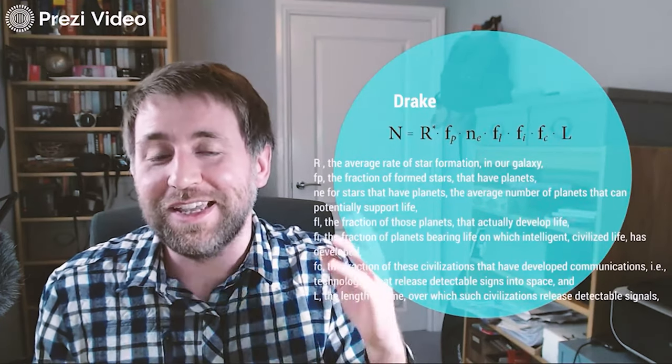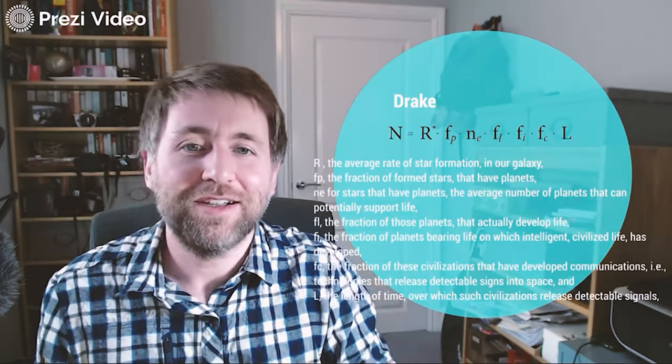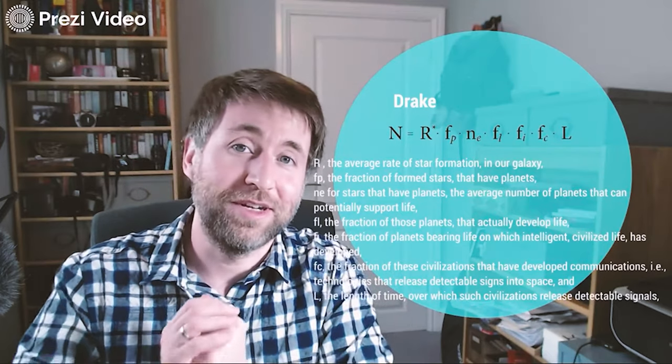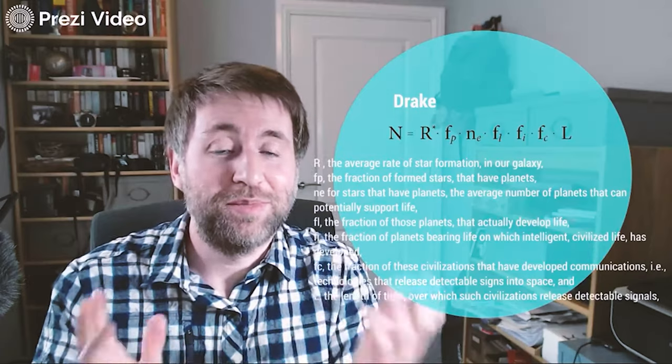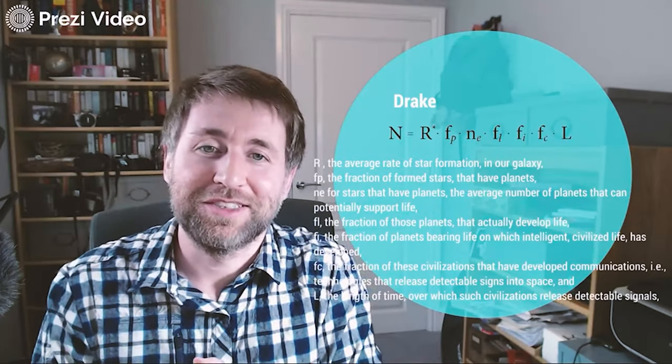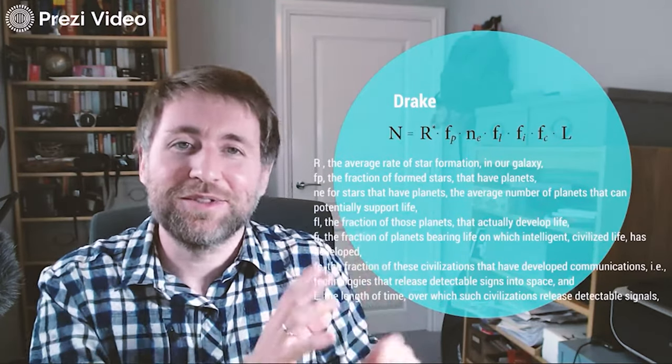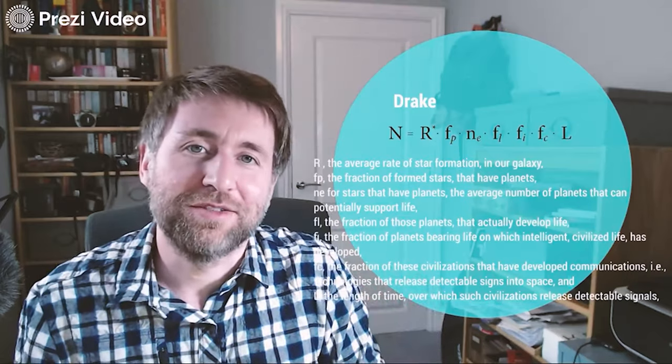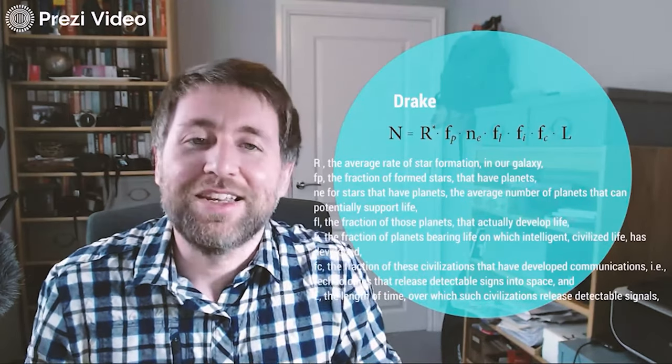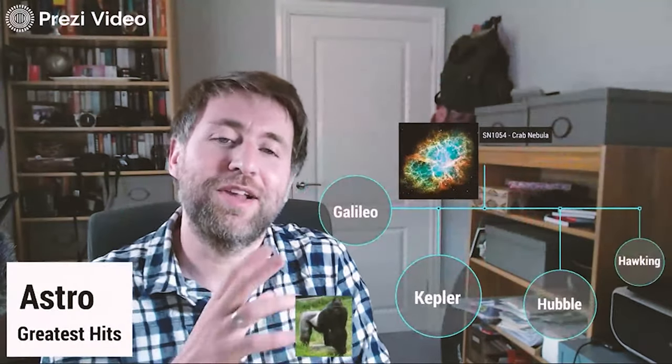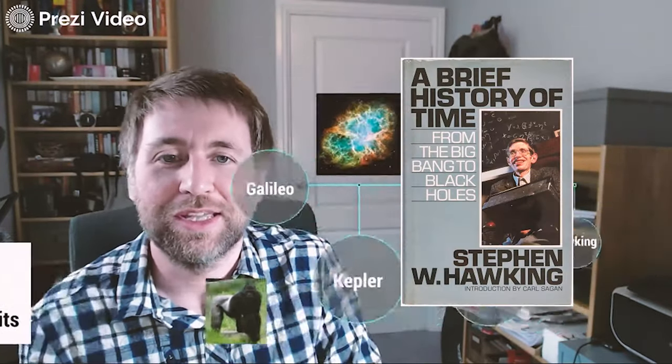Numbers, the problem with this is that estimates vary from like tiny, tiny decimals, 10 to the minus 13, to kind of millions or billions of possible civilizations in our galaxy. So it's kind of crude science, but it's a really interesting consideration of how many alien life forms, alien civilizations might you expect there to be.